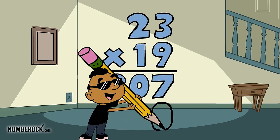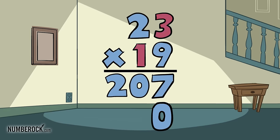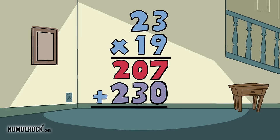Then write a zero when we multiply the tens. 3 times 1 is 3, 2 times 1 is 2, and now we know just what to do. Add the two numbers up and then get 437.